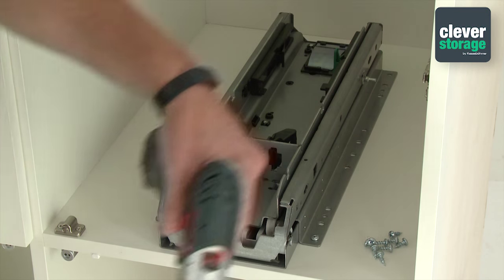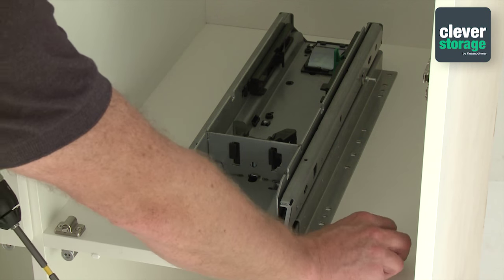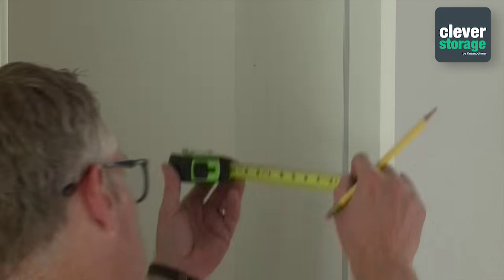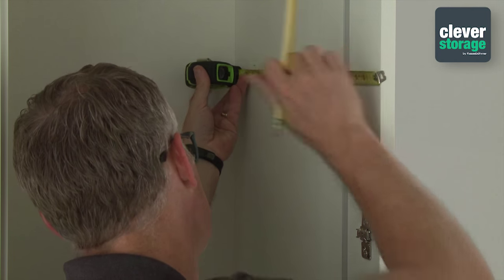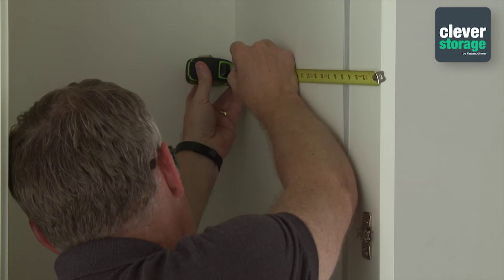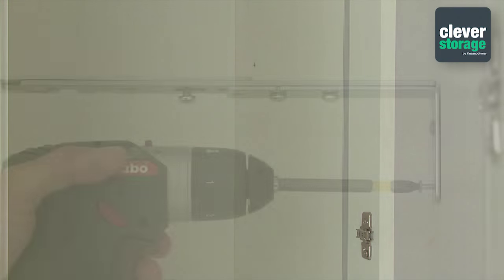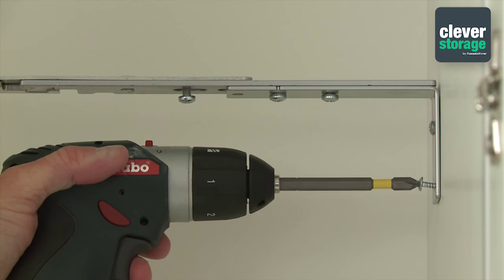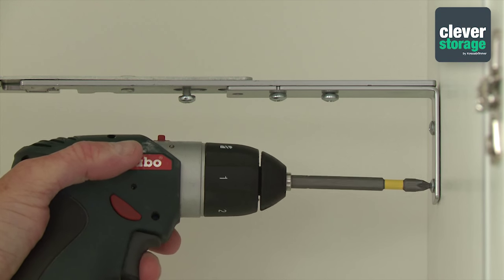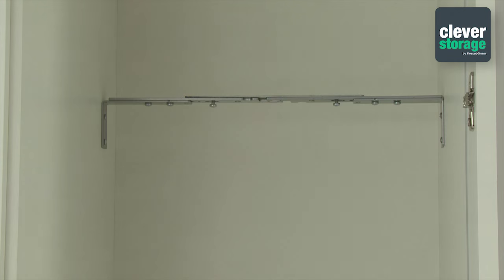Once the runner is installed, it's time to move on to the lateral support. Using your H measurement from the chart, measure up from the floor then back 483 millimeters and mark your two holes on each wall. Adjust the width of your lateral support bar to fit snugly into the width of the cabinet. Using your marks, install this bar to each wall of the cabinet.